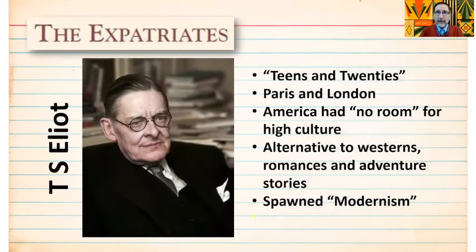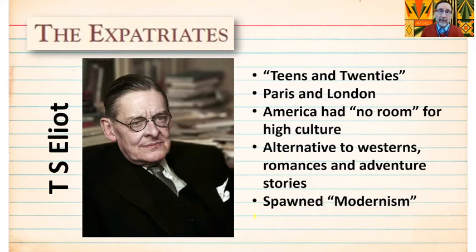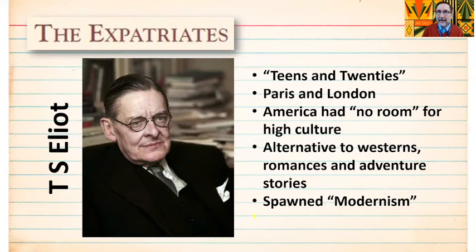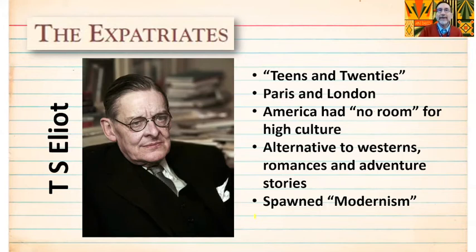Another group of writers during this time was known as the expatriates — writers who believed America no longer held the American dream for them. They literally packed up and went to Europe, mostly Paris, where they wrote, partied, and had a really good time while everybody back in America read their work. They believed they were creating real art while many Americans just wanted cheap entertainment. They thought if Americans had no taste for high culture, they'd go to Europe where it was appreciated. This is where modernism really took hold before coming back to the US.